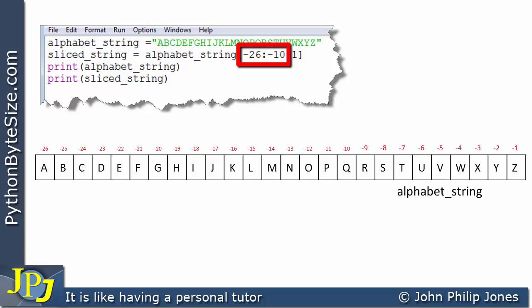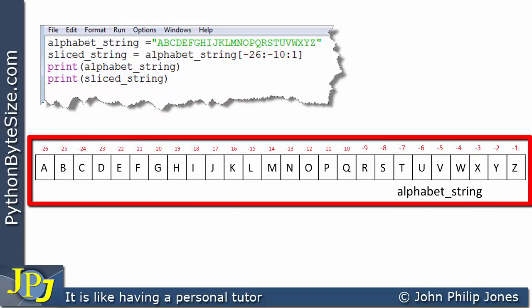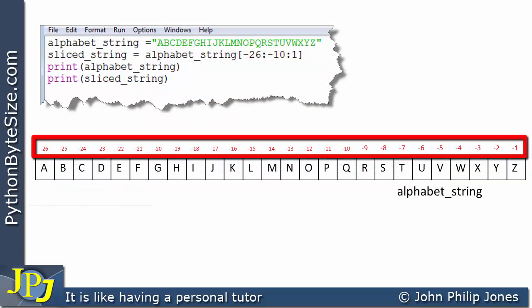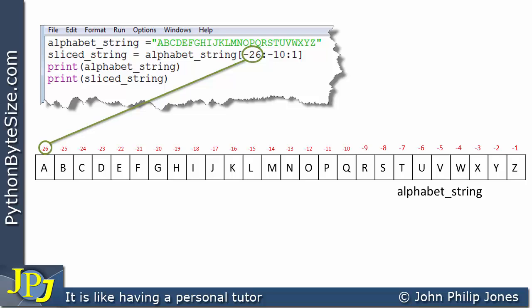So the fact that we have minus 26 and minus 10 is telling us that we're using the index positions as shown in the diagram, i.e. the negative ones. Starting at minus 26, we can see that that marks the start point here. Now this is minus 10. That tells us where the stop position is. So this bouncing X marks the stop position.